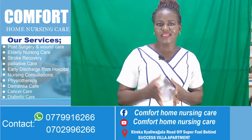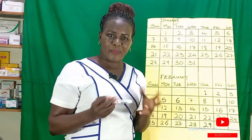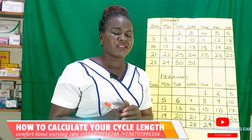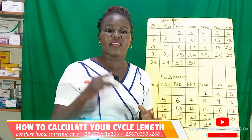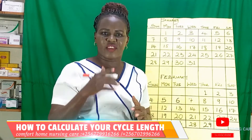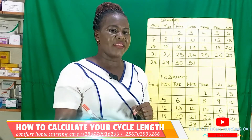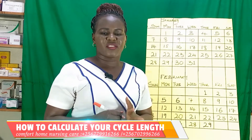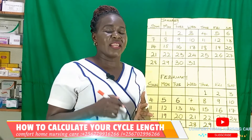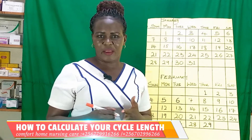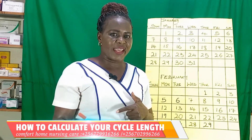Let's go straight to discussing how to calculate our cycle length. You'll need a calendar and a pen or marker. So exactly what is a cycle length? Cycle length is defined as the number of days in between two menstrual cycles — that is, the number of days from the first day you see your menstrual period blood to the last day before you see the blood of another month. Most people get confused and think it's the number of days you actually see your period blood, but that is not the menstrual cycle.